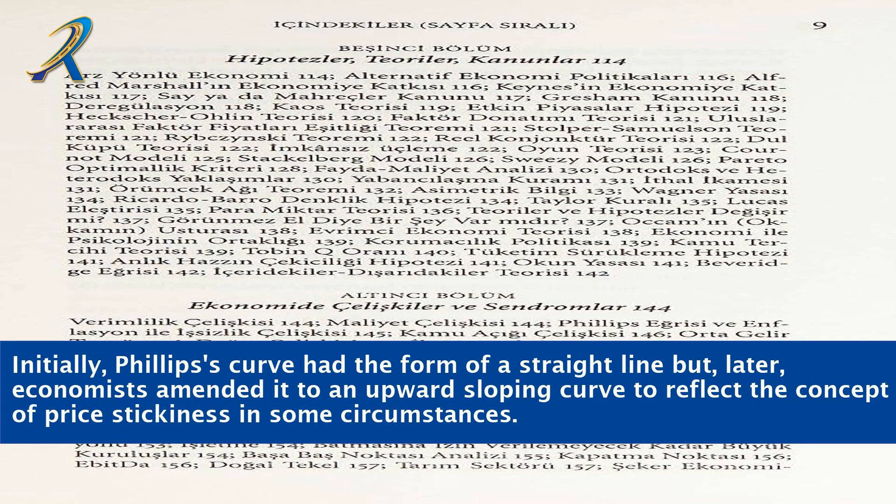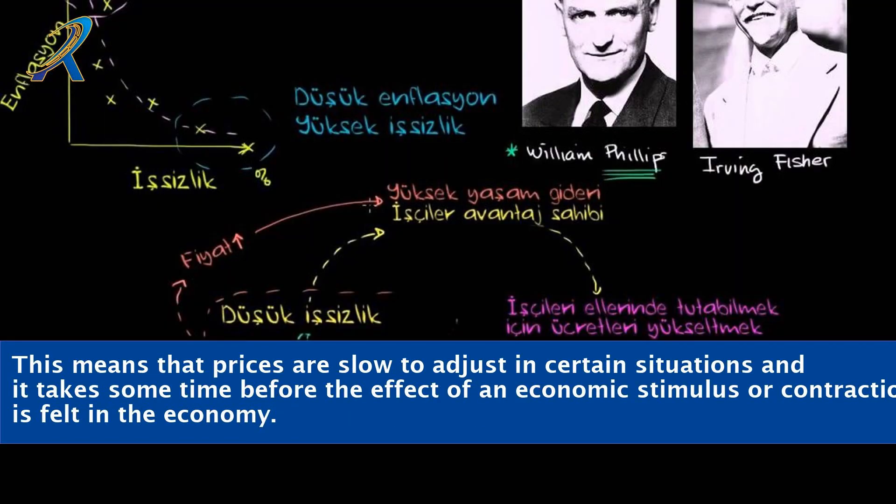Initially, Phillips' curve had the form of a straight line, but later economists amended it to an upward-sloping curve to reflect the concept of price stickiness in some circumstances. This means that prices are slow to adjust in certain situations and it takes some time before the effect of an economic stimulus or contraction is felt in the economy.